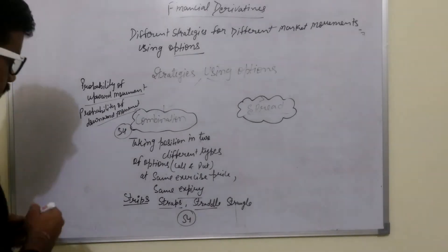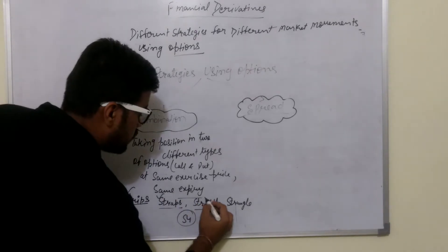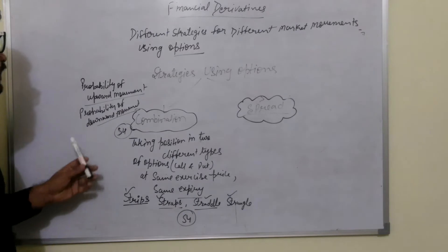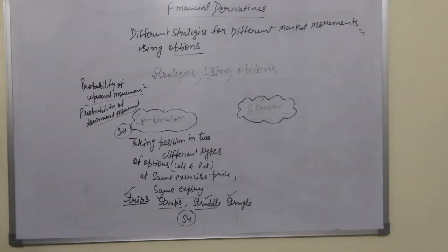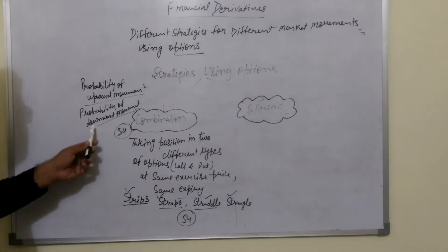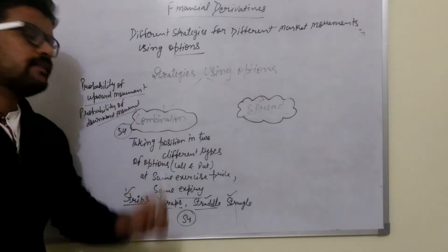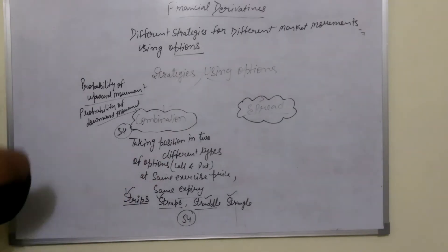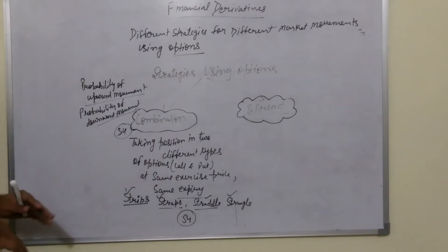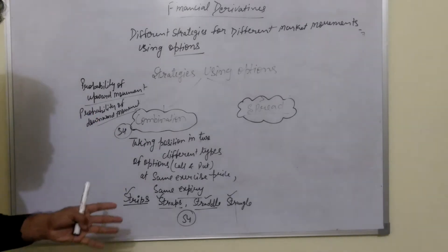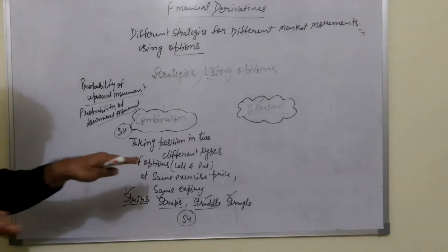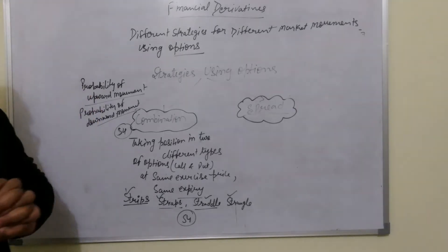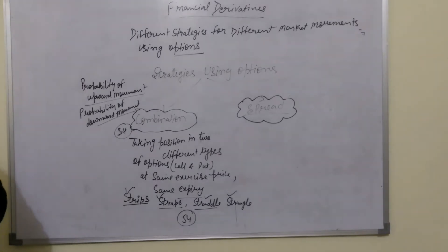These four strategies are used under combination. We use combination when the probability of upward movement is higher than the probability of downward movement, or the probability of downward movement is higher than the probability of upward movement — one probability will always be higher.